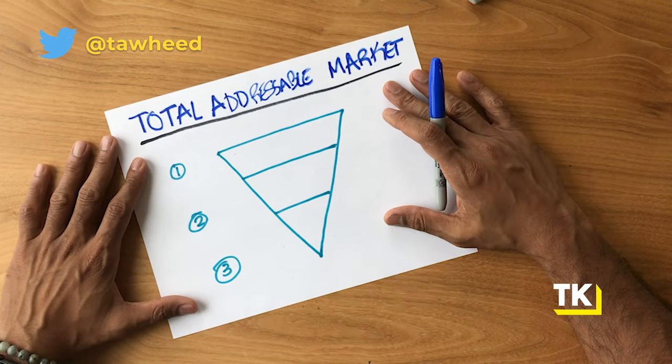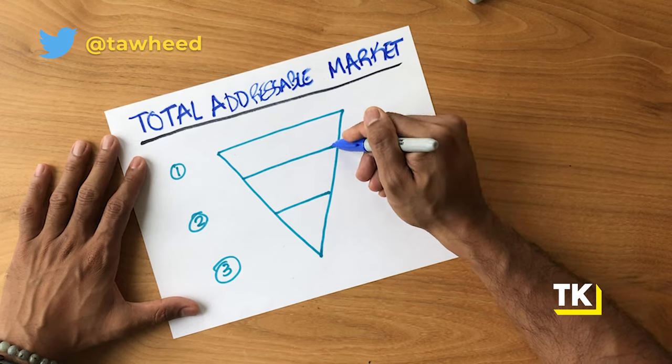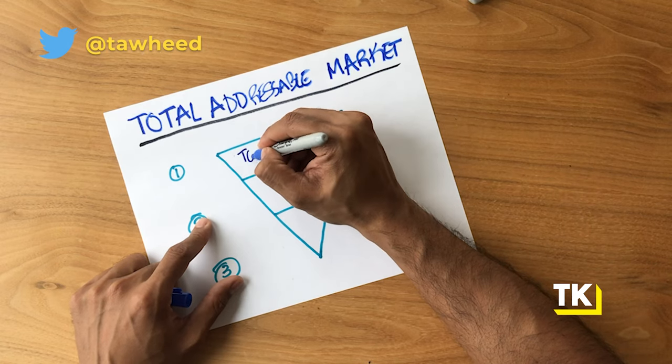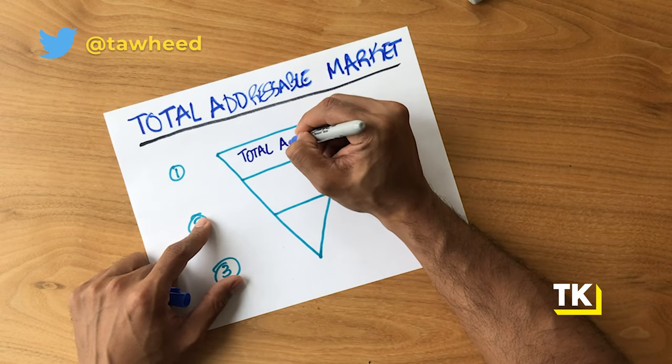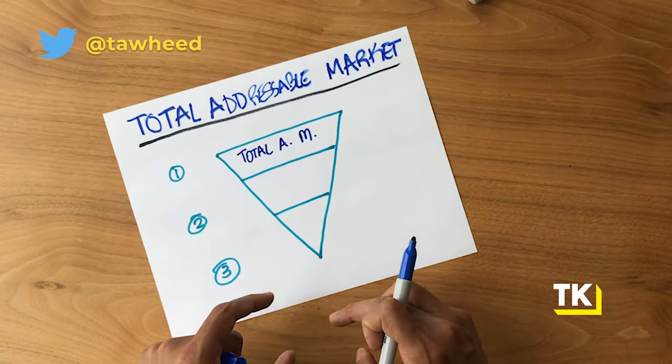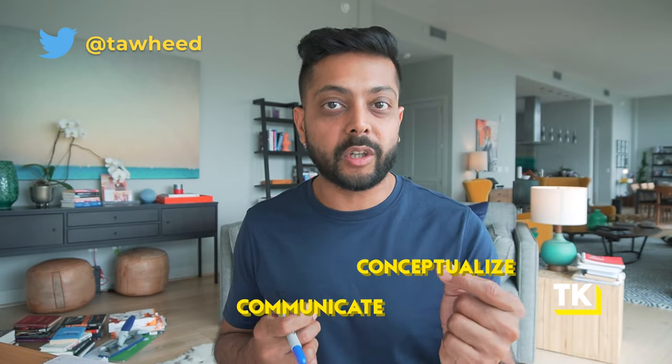There are essentially three core pieces to how you think about total addressable market. The first is your actual total addressable market. The other two are less obvious, but when you look at all three together, you'll understand exactly how to conceptualize and communicate it — because when investors, yourself, or your team are talking about TAM, they're not just talking about total addressable market alone. The first thing you want to understand is what is actually the market you're going after.